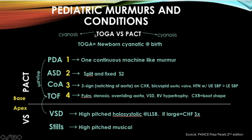Now for pediatric murmurs using the Toga versus Pact chart. It's not as busy as Mr. Taps but covers the key pediatric conditions. Note that pulmonary atresia and tricuspid atresia are excluded because adding them would make the chart too complicated. The most important thing to know up front: the two most common conditions presenting with cyanosis are transposition of the great arteries (TOGA) and tetralogy of Fallot.